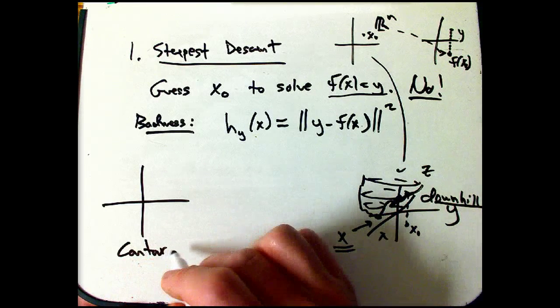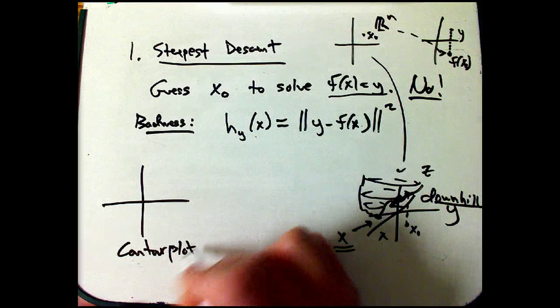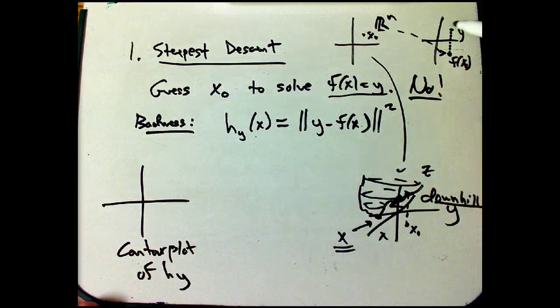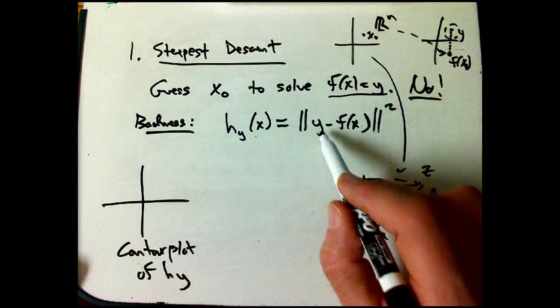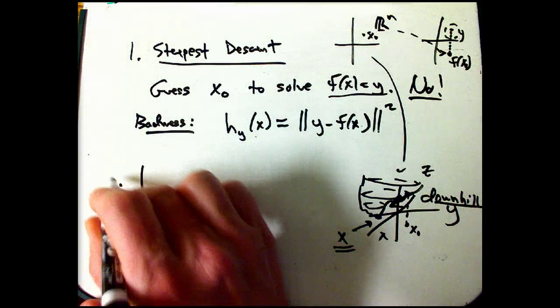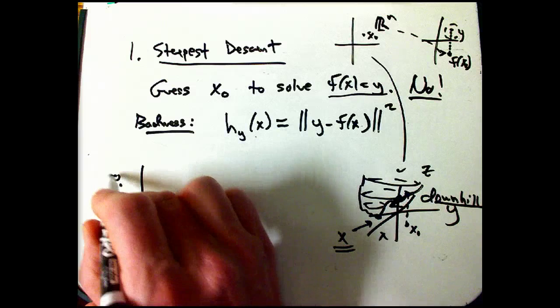Another way to look at it is, look at the contour plot of h_y, remember this is all based on a certain y that I want to hit, because that goes into the definition of h_y. So here's maybe zero, secretly, the zero contour is here.